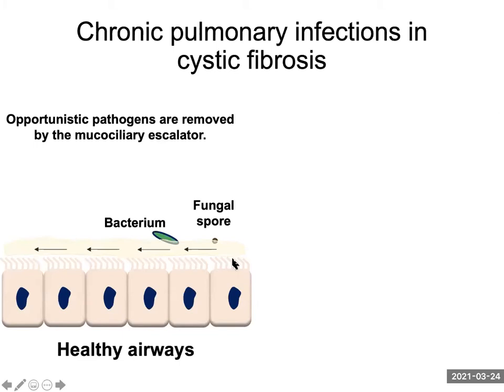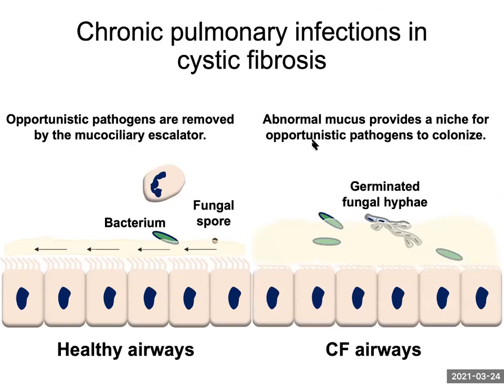Organisms get caught in the mucus that lines the airways. This mucus is removed mechanically by ciliated epithelial cells found in the upper respiratory tract. Any organisms that bypass this mechanism get caught in the lower airways, where phagocytic cells can remove them. In contrast, in patients with chronic lung diseases such as cystic fibrosis, these innate immune mechanisms are defective.